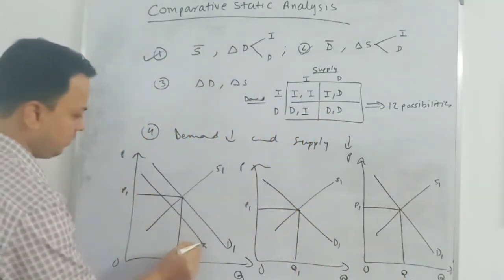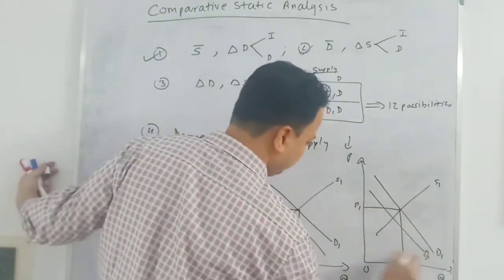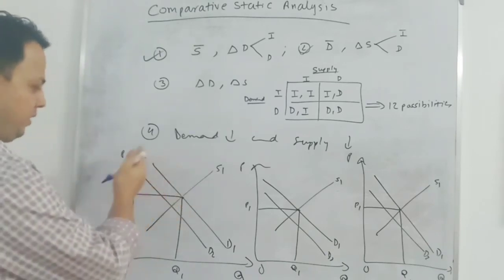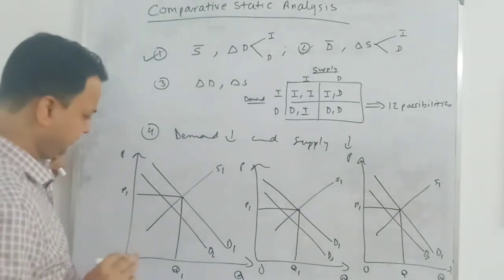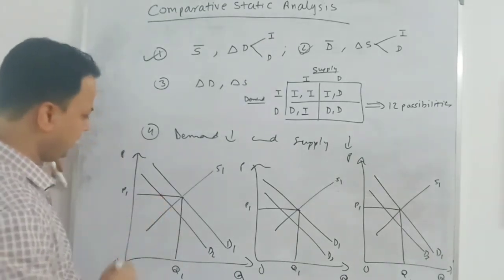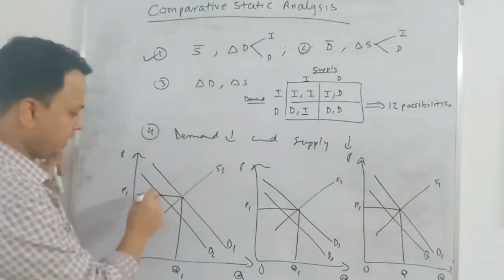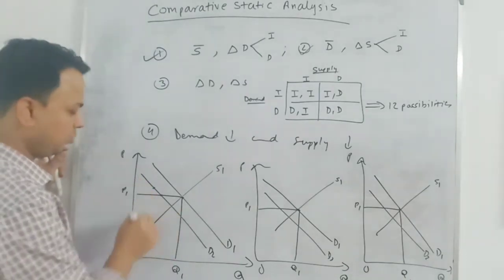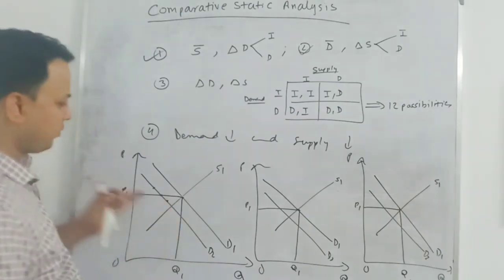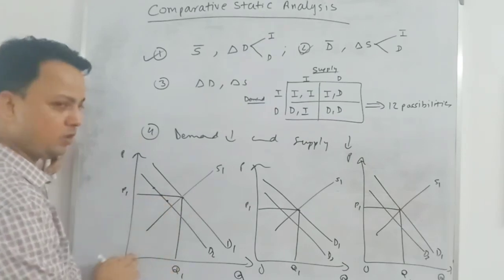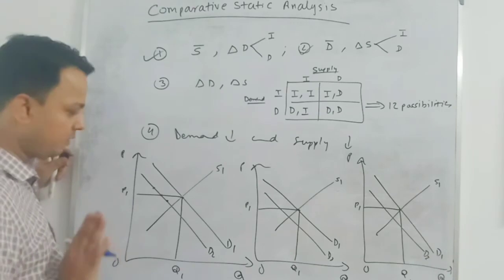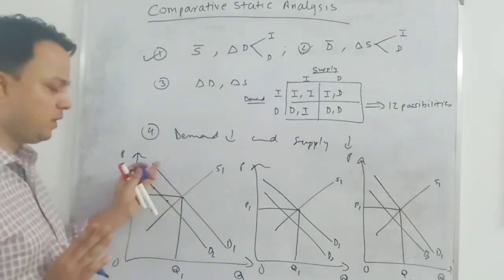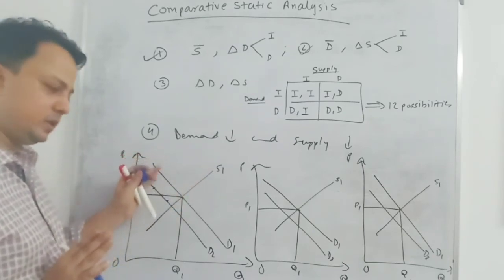Both decrease: the demand curve shifts leftward to D2, and the supply curve also decreases, shifting leftward. I can have three possibilities. One possibility: supply shifts leftward such that equilibrium price remains the same and quantity is lower. A second possibility: supply shifts further leftward so equilibrium price is higher and quantity is lower. Or I can shift supply slightly leftward so equilibrium price is lower but quantity is still lower.